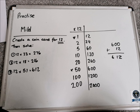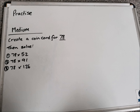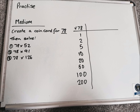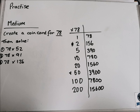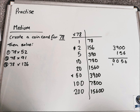Well done if you got those correct. Let's have a look at the medium questions. For medium, we were creating a coin card for 78. The answers for our coin card should have been this — if you got any incorrect, pause here and have another look. The first problem was 78 times 52 — I need to make 52, so I use the 50 and the 2. Adding 3,900 and 156, I get 4,056.